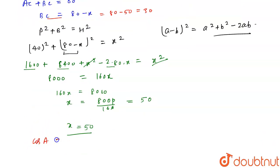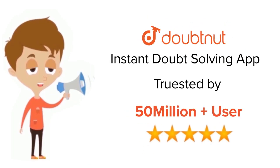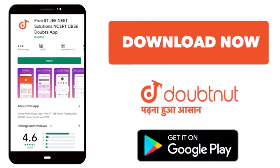So cos A is equal to 4 by 5, and this is our answer. Thank you for watching this video. For class 6 to 12, IIT-JEE and NEET level, trusted by more than 5 crore students, download Doubtnut today.